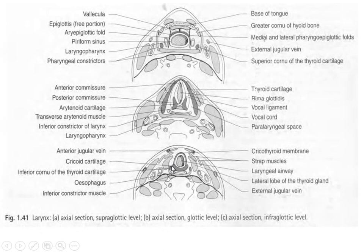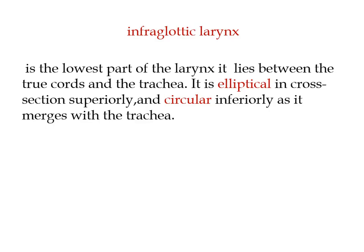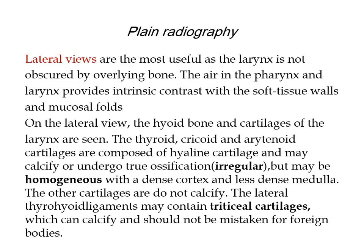The importance of knowing this anatomy is that the neck has very complex anatomical structures and is a very common site for malignancy. Laryngeal carcinoma is a very common fatal disease, especially in smokers. The entire management differs according to the level of the tumor — whether it is supraglottic, glottic, or infraglottic — so your radiology report will define the management of the patient.